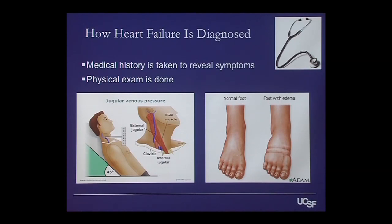And then you do a physical exam. A lot of times, if many of you know someone with heart failure, we always look at the neck. We have what's called the internal jugular vein, which is like a dipstick that drains right into the heart. So if a patient has backup of fluid, it's going to become very prominent, and that's what we're going to see on our exam.